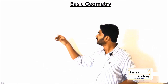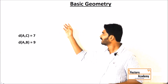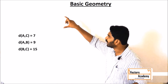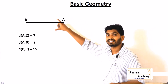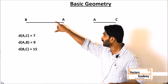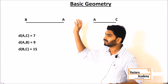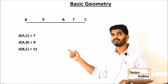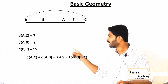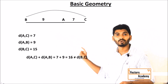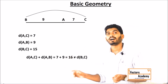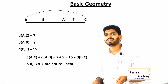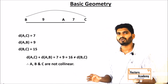Consider the next example. Segments AC, AB, and BC are given with their measurements. The two smaller measurements are 7 and 9 — that's AC and AB. Remember A is the common point. Adding these two: 9 plus 7 gives 16. Now is it equal to the larger segment? No. So the points are not lying on the same line — they are non-collinear points. This is how you identify whether the points are collinear or not.